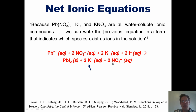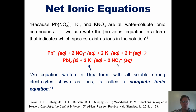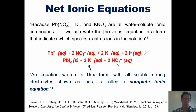For potassium nitrate, we follow the same kind of process that we did for potassium iodide. When we write an equation in this form — with all of the soluble electrolytes shown as separated ions, and the precipitate shown not separated out — this is called a complete ionic equation.